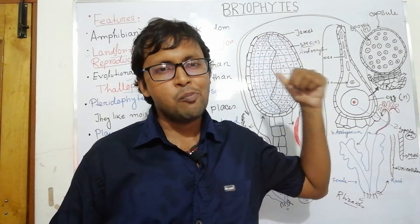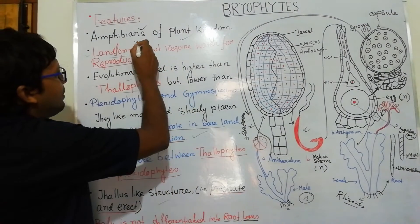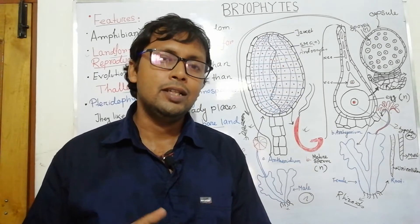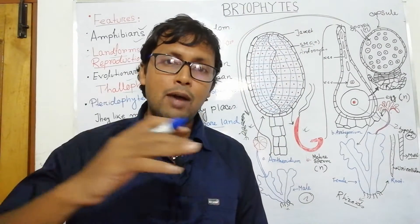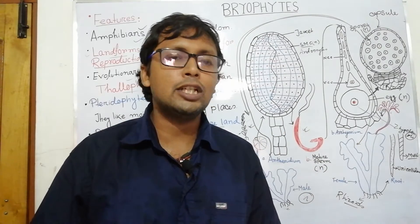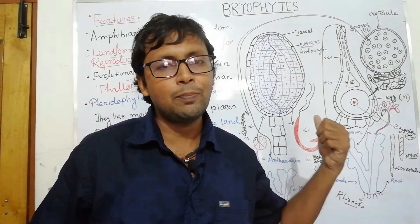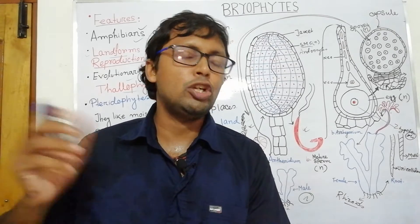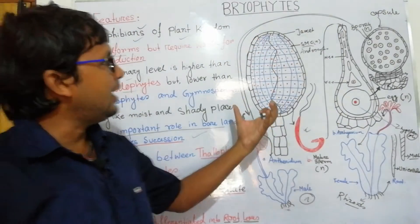Bryophytes — the most important trait is that they are called amphibians of the plant kingdom because they are land forms, they live on land, but for sexual reproduction, for sperm motility, water is required. Without water, sexual reproduction is not possible, so they are called amphibians of the plant kingdom.